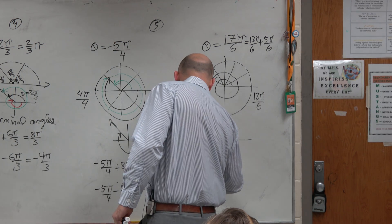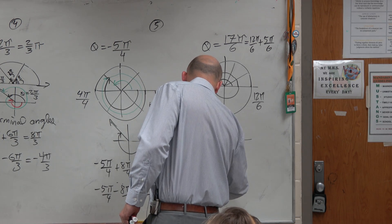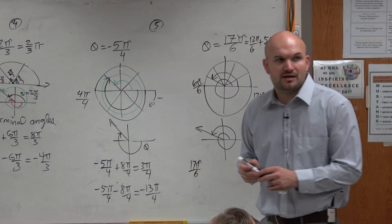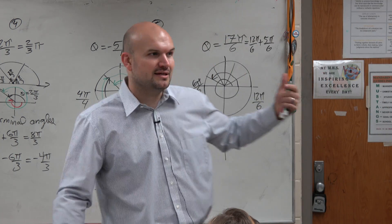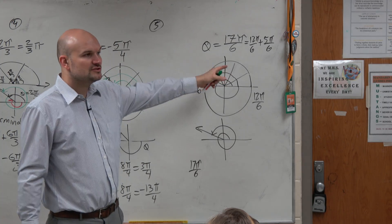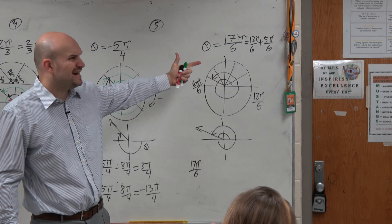Now, let's go and find our coterminal angles. 17π over 6. Now, here's where you want to be careful. You don't want to just memorize plus or minus. Because if you add 12π over 6 to that, you're going to get 29π over 6.